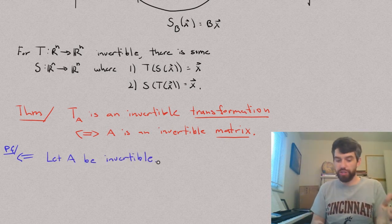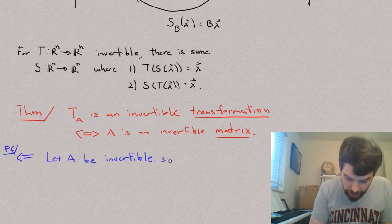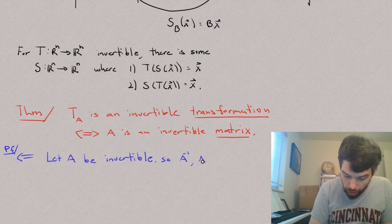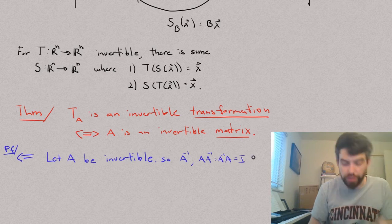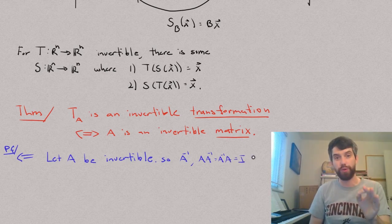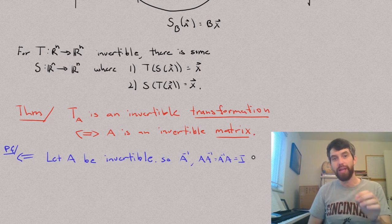Which, of course, just means that there is some matrix A inverse and it has that nice property that A times A inverse is equal to A inverse times A is equal to the identity. That was our defining property of being invertible as a matrix.